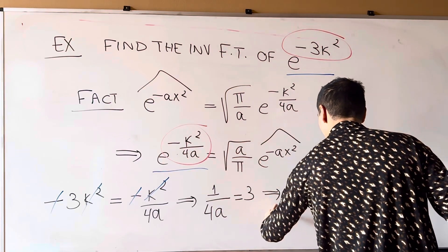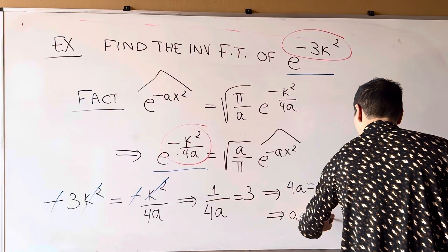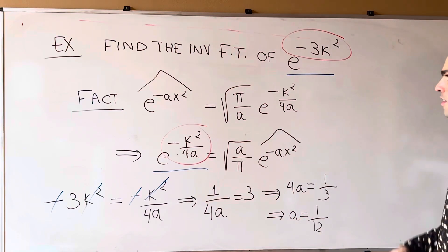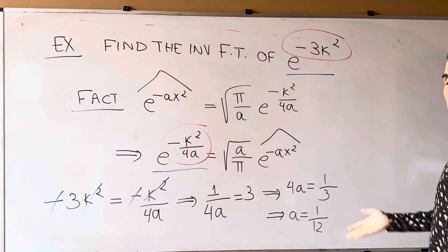is 1 third. And so, a is 1 over 12. And then, so plugging this in,